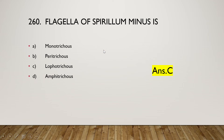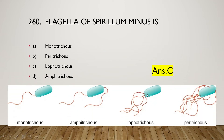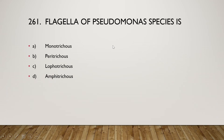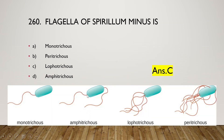The next question: flagella of Spirillum minus is monotrichous, peritrichous, lophotrichous, or amphitrichous? The right answer is option C, lophotrichous, meaning multiple flagella present at one side of the bacterial cell. Flagella of Pseudomonas species is amphitrichous, meaning one flagellum on both sides of the cell. Monotrichous means only one flagellum, and peritrichous means flagella cover the whole body.